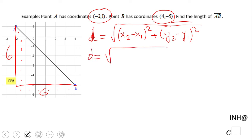Now we just plug in the values. This is x₁, this is y₁, this is x₂, and this is y₂. Let's see what we get: we have (4 minus negative 2) squared plus (negative 5 minus 1) squared.